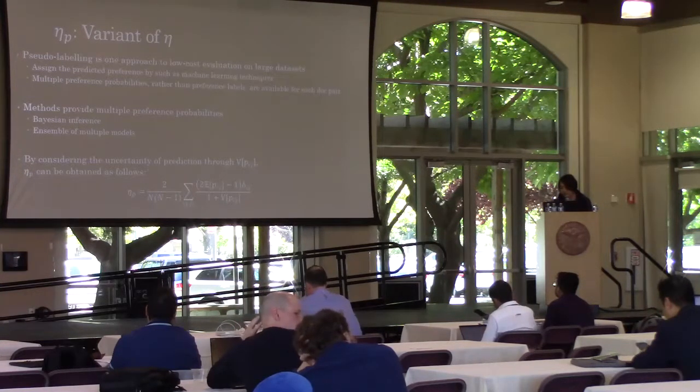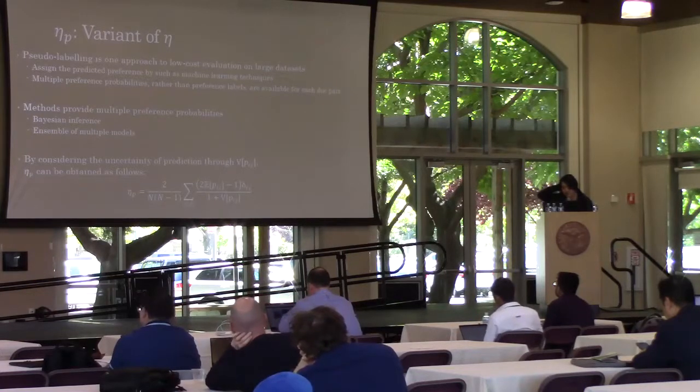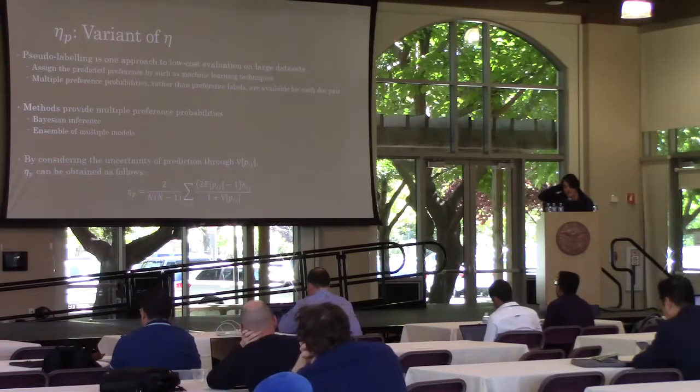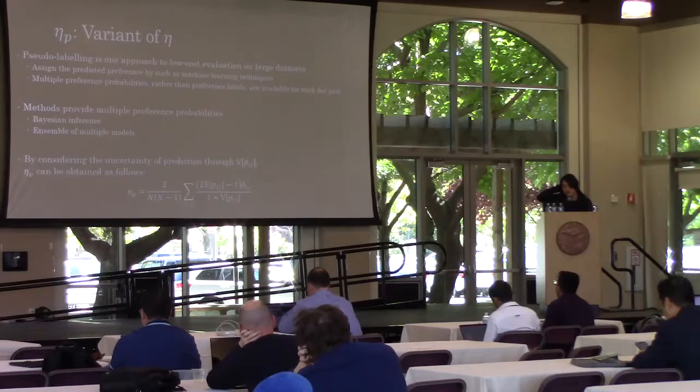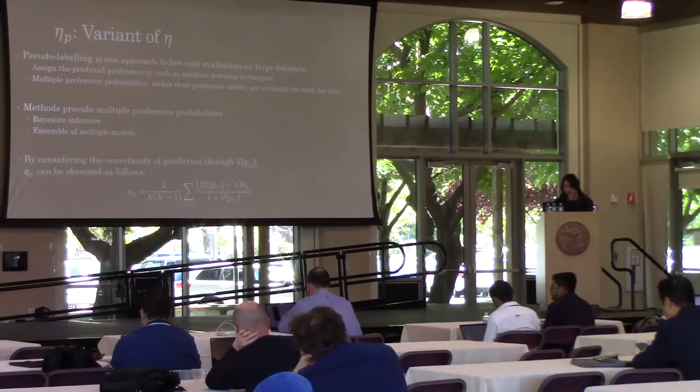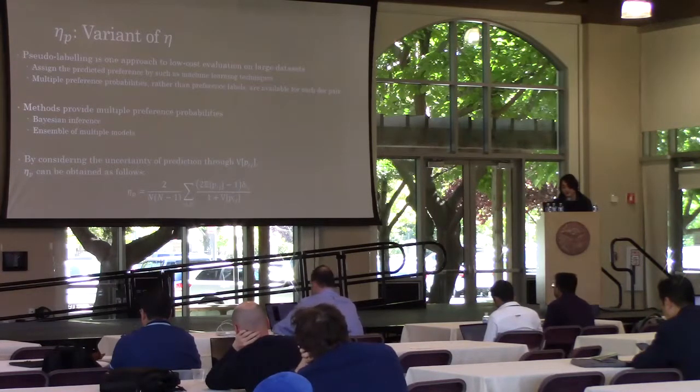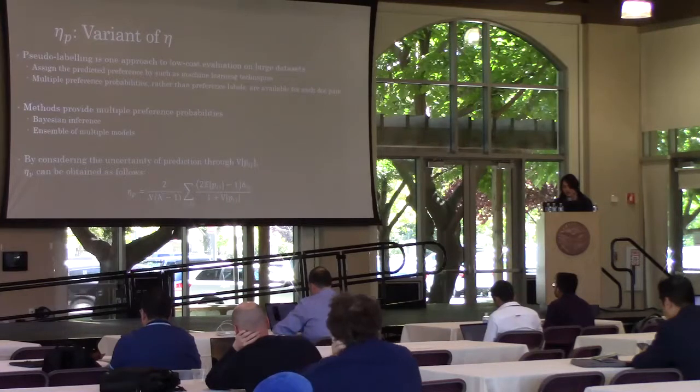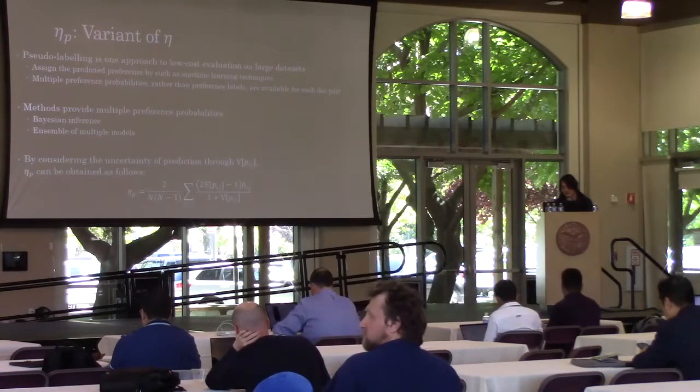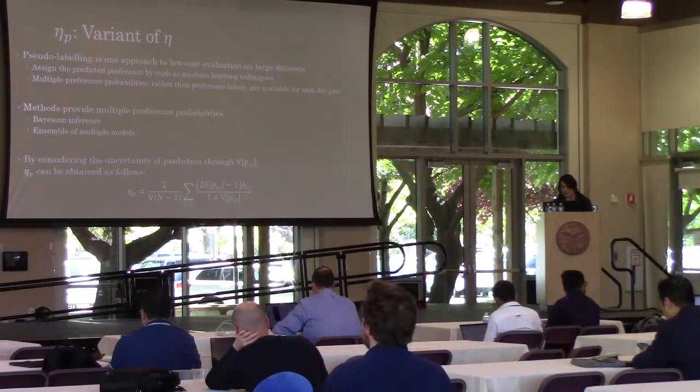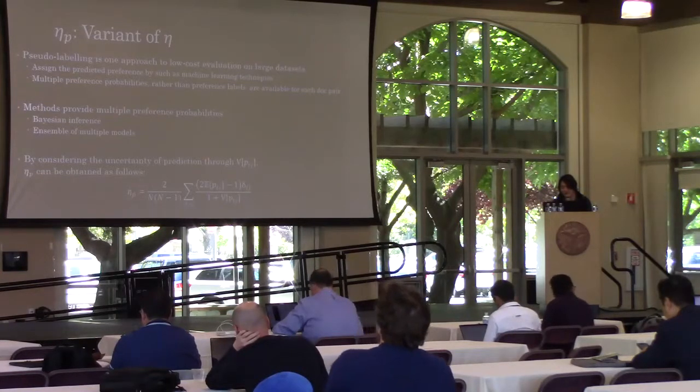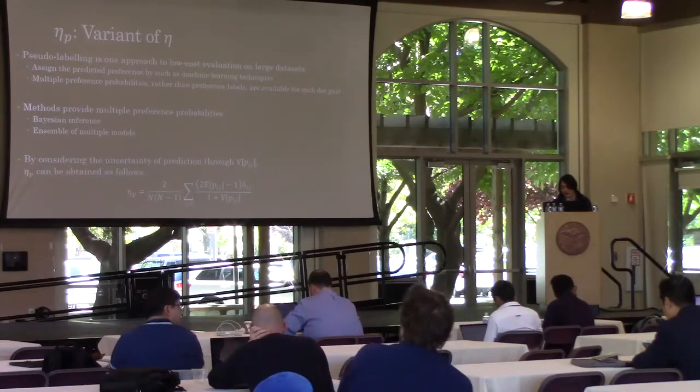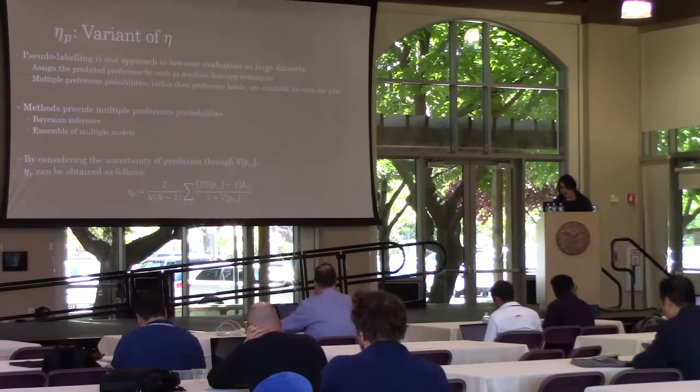We would like to explain another proposal measure. Subsampling is one approach to reduce the cost of evaluation on large datasets. We can assign predicted preferences to each document pair by machine learning techniques. With such methods, multiple preference label probabilities rather than preference labels are available for each document pair.